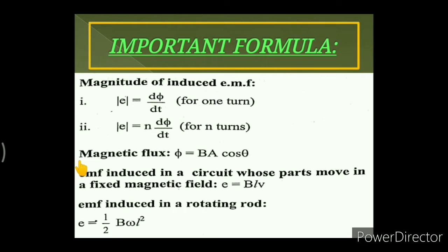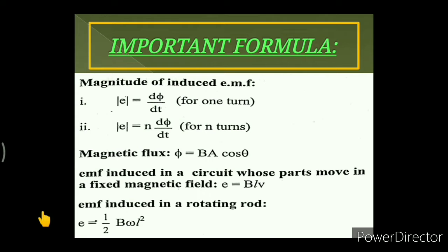The magnetic flux is given as a scalar product of B and A, so it is given as Φ = BA·cosθ, where θ is the angle between the area vector and the direction of the magnetic field of induction.